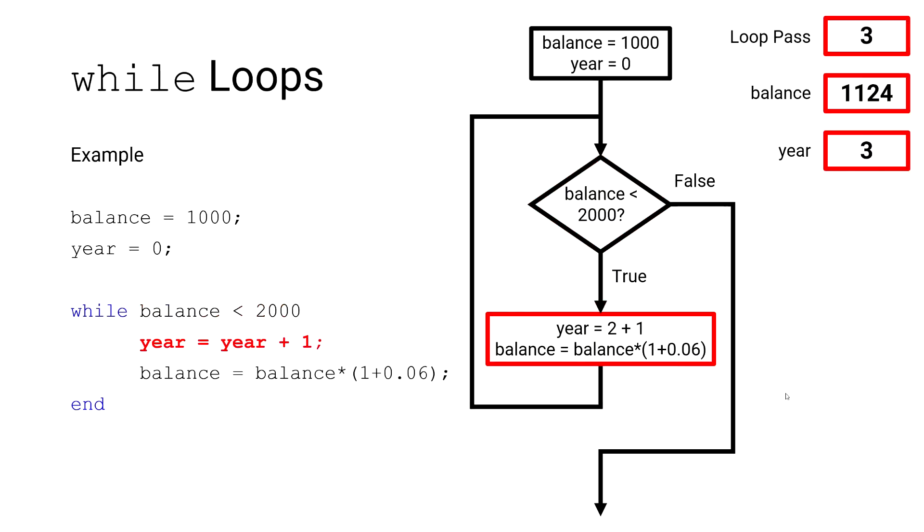So this is our third loop pass, fourth loop pass, fifth loop pass, eighth loop pass, ninth loop pass, 10th loop pass, 11th loop pass, and this ends up being our 12th and final loop pass.